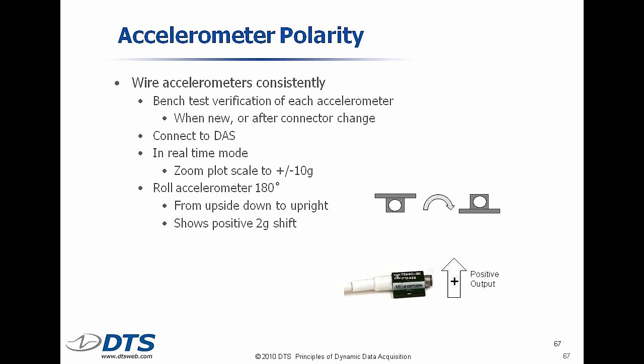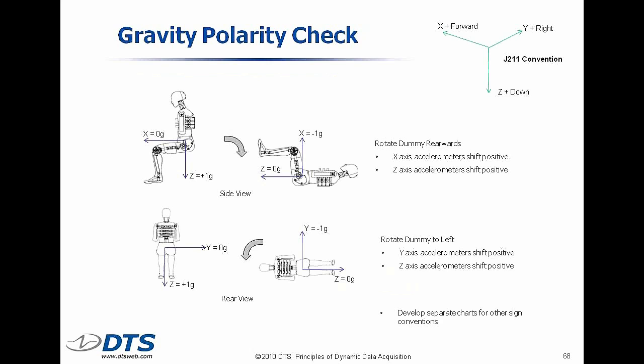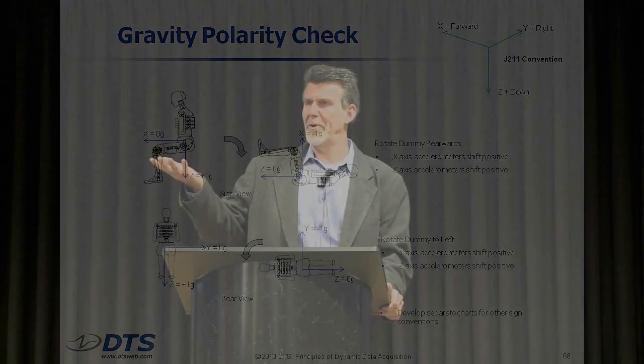A lot of people actually take the dummy and just manipulate it — after it's all wired up and running, perhaps in the real-time data display mode. You can actually take the dummy and roll him over on his back, roll him onto his side, and confirm the polarities, remembering that the surface of the earth is always pushing us up with one G.